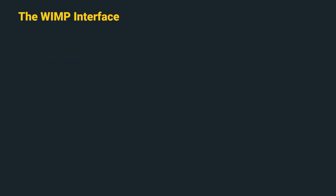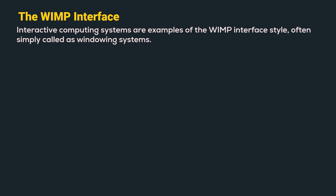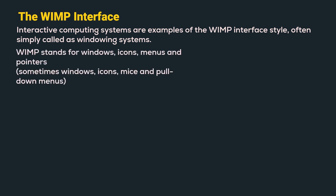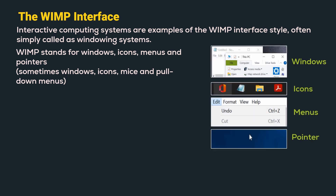The next interface style is the WIMP interface. Interactive computing systems are examples of the WIMP interface style, often simply called windowing systems. WIMP stands for windows, icons, menus and pointers, sometimes also referred to as windows, icons, mice and pulldown menus. Here is an example of windows, icons, menus and pointer.